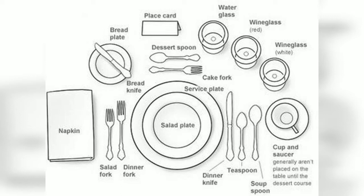As you can see on the screen, there is a water glass, next to it a red wine glass, then a white wine glass, and a cup and saucer. Everything is on the right hand side. That is the reason all liquids or beverages are going to be on the right hand side.